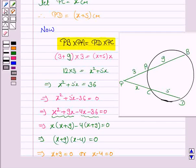If two chords of the circle intersect inside or outside the circle, then the rectangle formed by two parts of one chord is equal to the area of the rectangle formed by the two parts of the other chord. And this is a very important property.